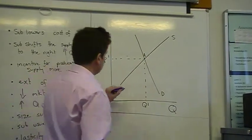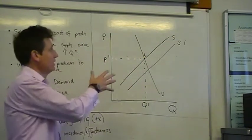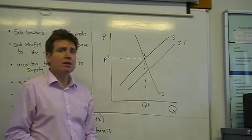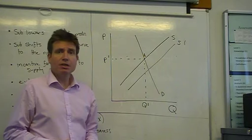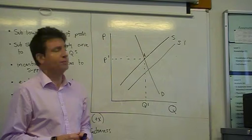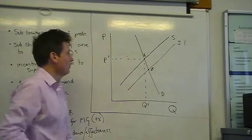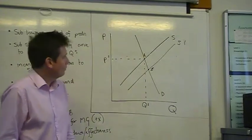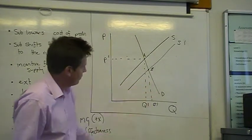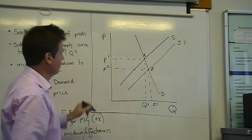Now let's introduce the subsidy. What we have then is a movement to the right of the supply curve. This is because the firm gets a subsidy, which can potentially reduce their cost of production and gives them an incentive to increase output. We've now got our new equilibrium at point B, which has led to an increase in quantity demanded and also a fall in price.